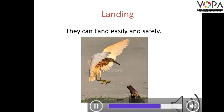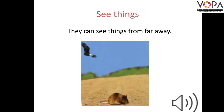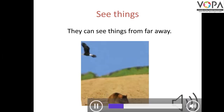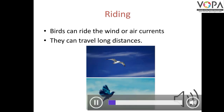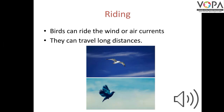Landing — they can land easily and safely. See things — they can see things from far away. Riding — birds can ride the winds or air currents, and they can travel long distances.